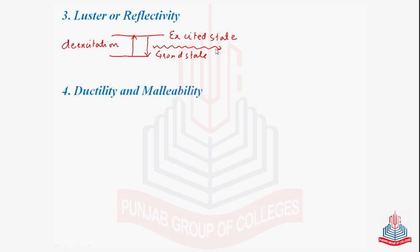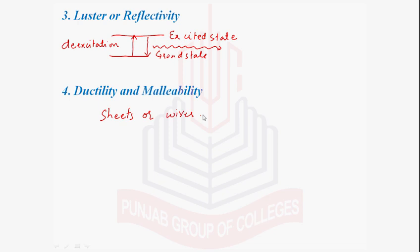Moving to another property — ductility and malleability. We all know that metals are ductile and malleable, meaning they can be drawn into sheets or wires. The reason behind this is that the structure of the metal changes without fracturing when stress is applied. The layers move but do not show any internal disruption, and the sea of electrons adjusts positions rapidly so the crystal lattice is restored. In this way, metals are ductile and malleable and can be drawn into sheets or cut into wires.